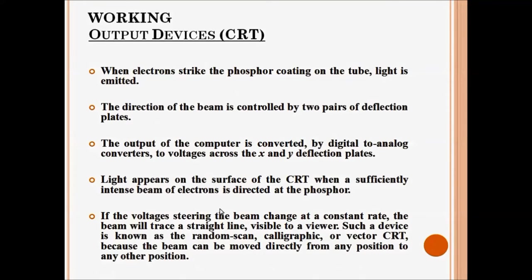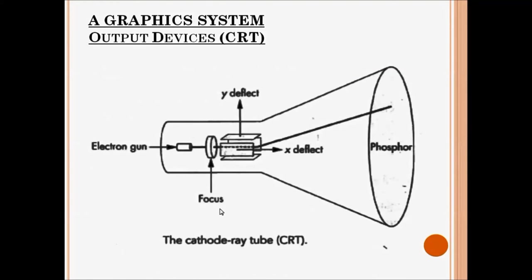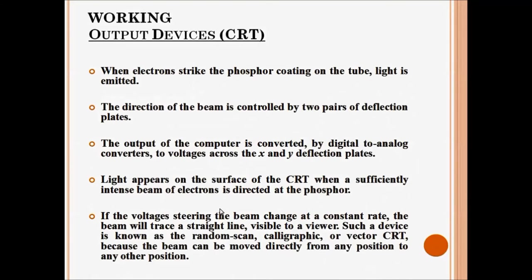When electrons strike the phosphor coating on the tube, light is emitted. The direction of the electron beam is controlled by two pairs of deflection plates — X and Y deflection plates — that are perpendicular to each other. The output from the computer (pixel data in the frame buffer) is converted by digital-to-analog converters to voltages across the X and Y deflection plates. If the voltages steering the beam change at a constant rate, the beam traces a straight line, and this type of device is called a random scan, calligraphic, or vector CRT.